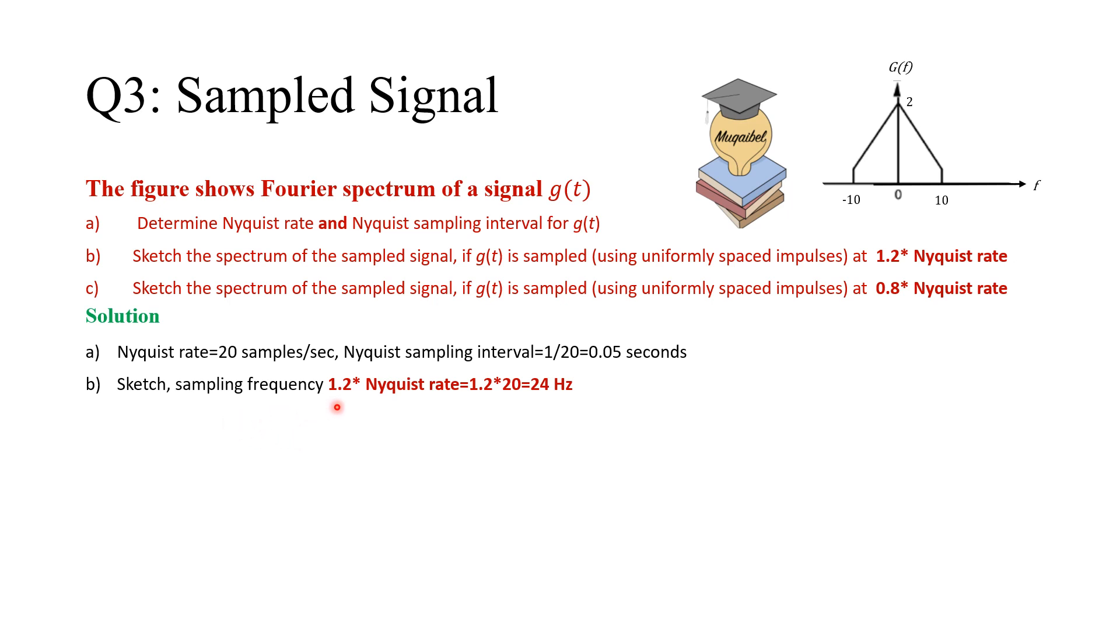Sketch the spectrum. If the sampling frequency is 1.2 times the Nyquist rate, then it's 1.2 times 20, which is 24 Hz. Remember that the spectrum of the sampled signal will be repeated images at multiples of the sampling frequency and scaled by Fs. So, the spectrum should look like this. The same spectrum will be repeated at Fs. And the magnitude also will be scaled by Fs. So, in this case, the correct spectrum should be the following. You should have all the numbers correct. 10, 14, 24, 34, and so on. So, 24 is the sampling frequency. And the scaling is 2 times 24 is 48. This is usually a common mistake.